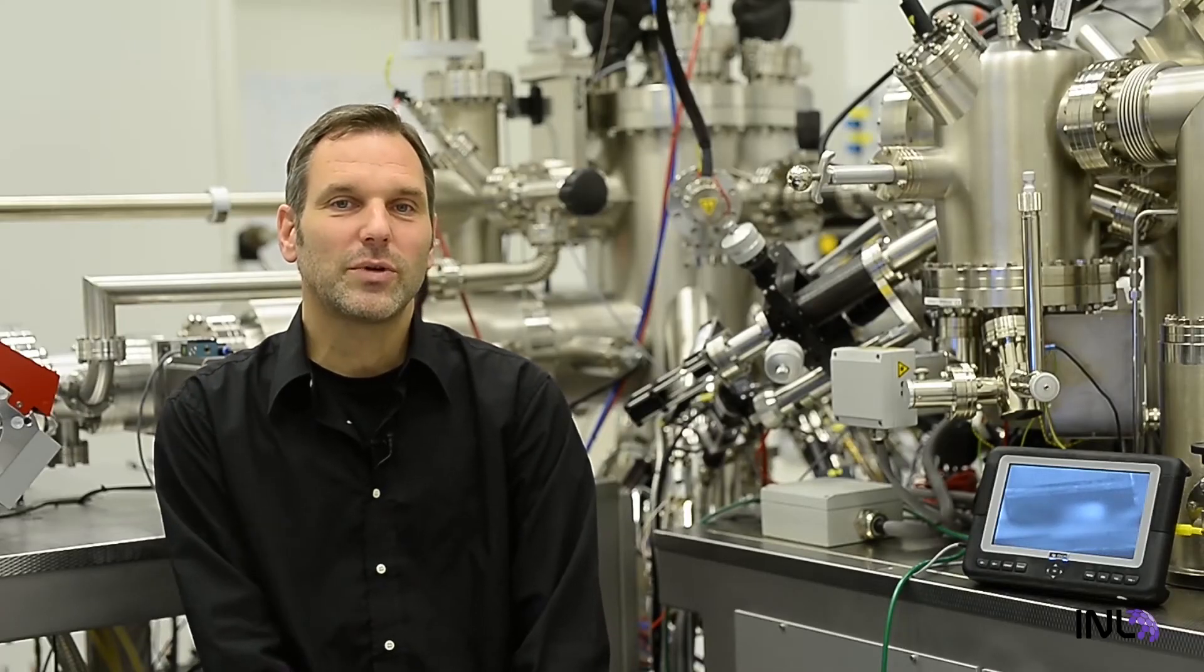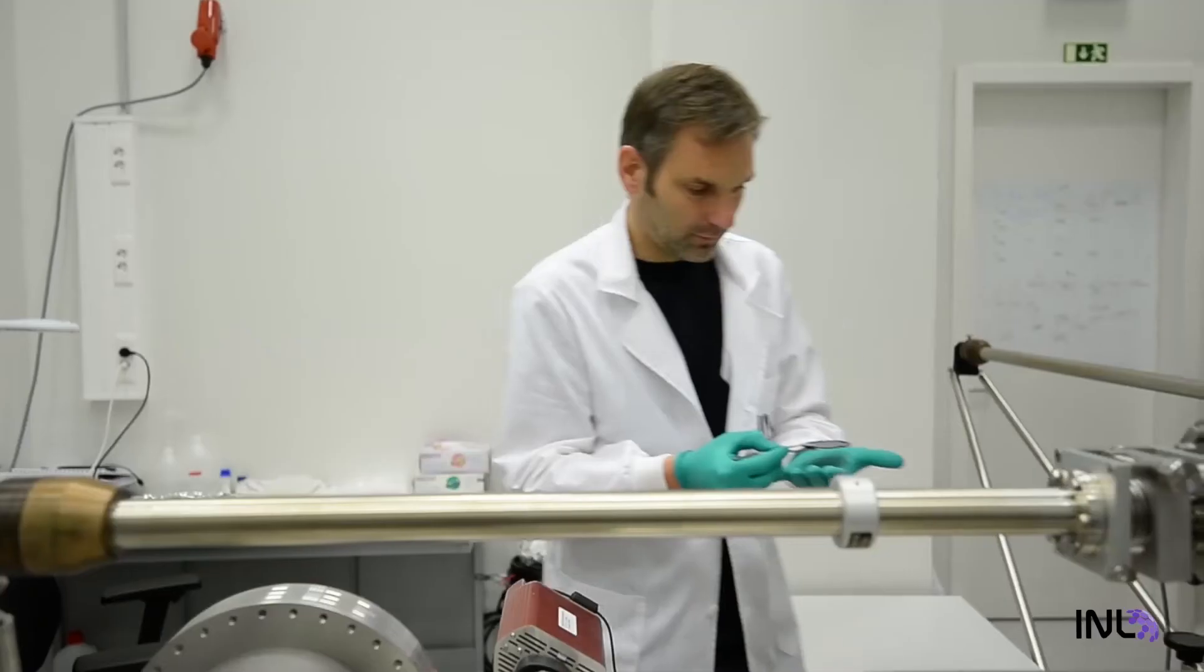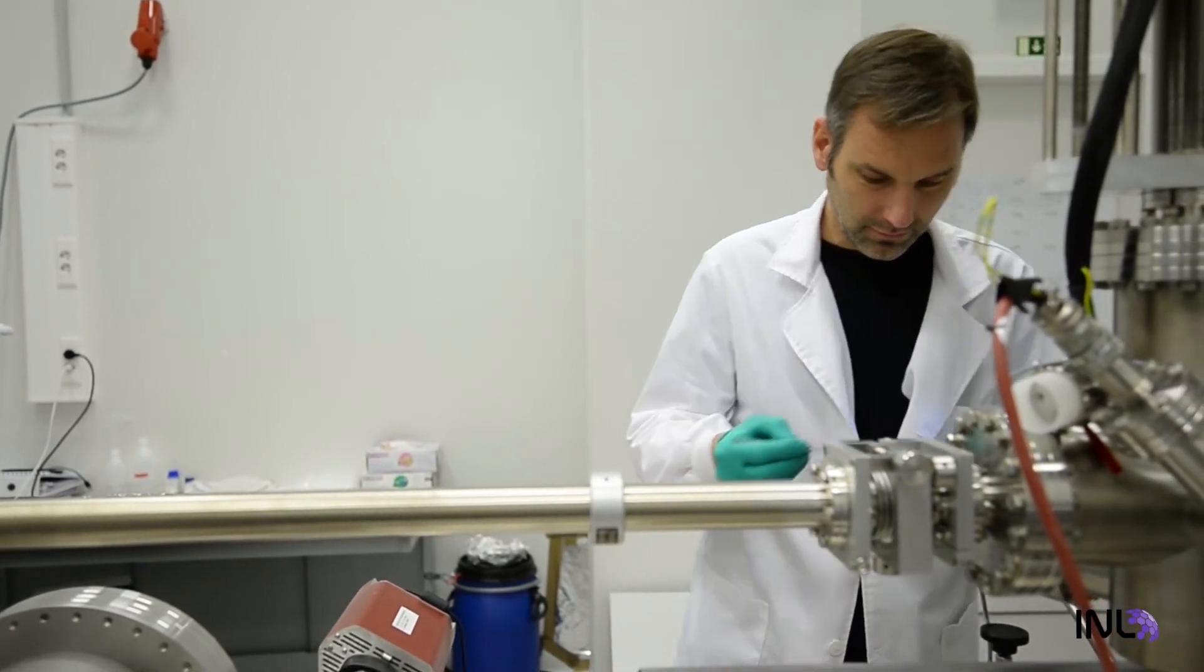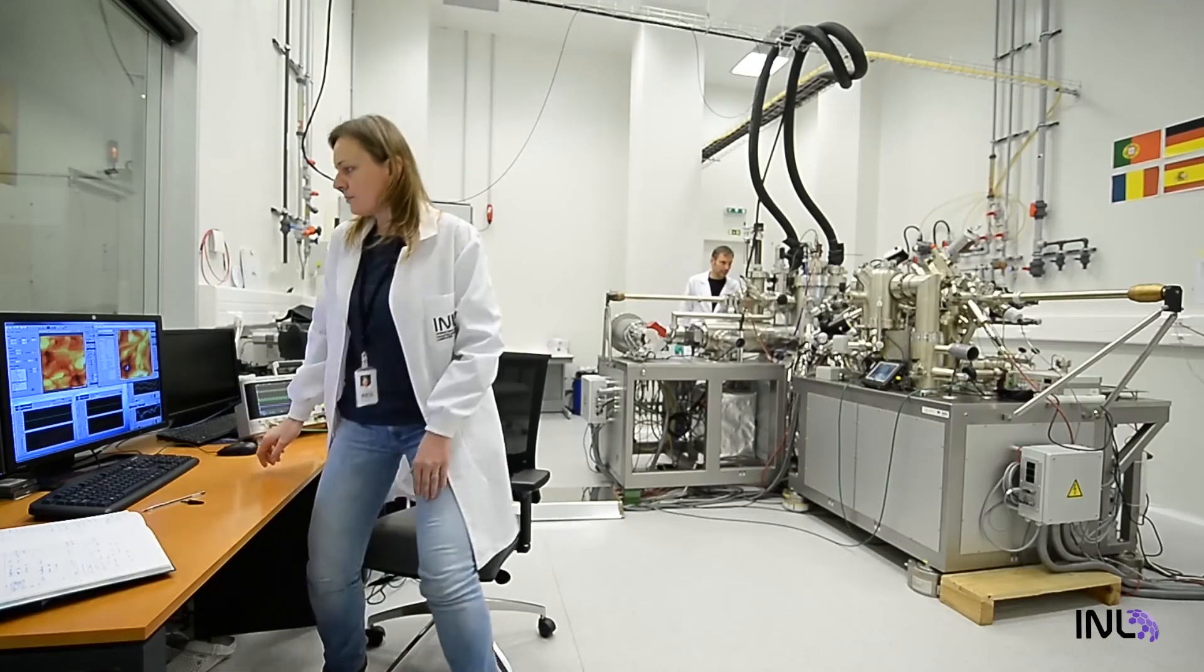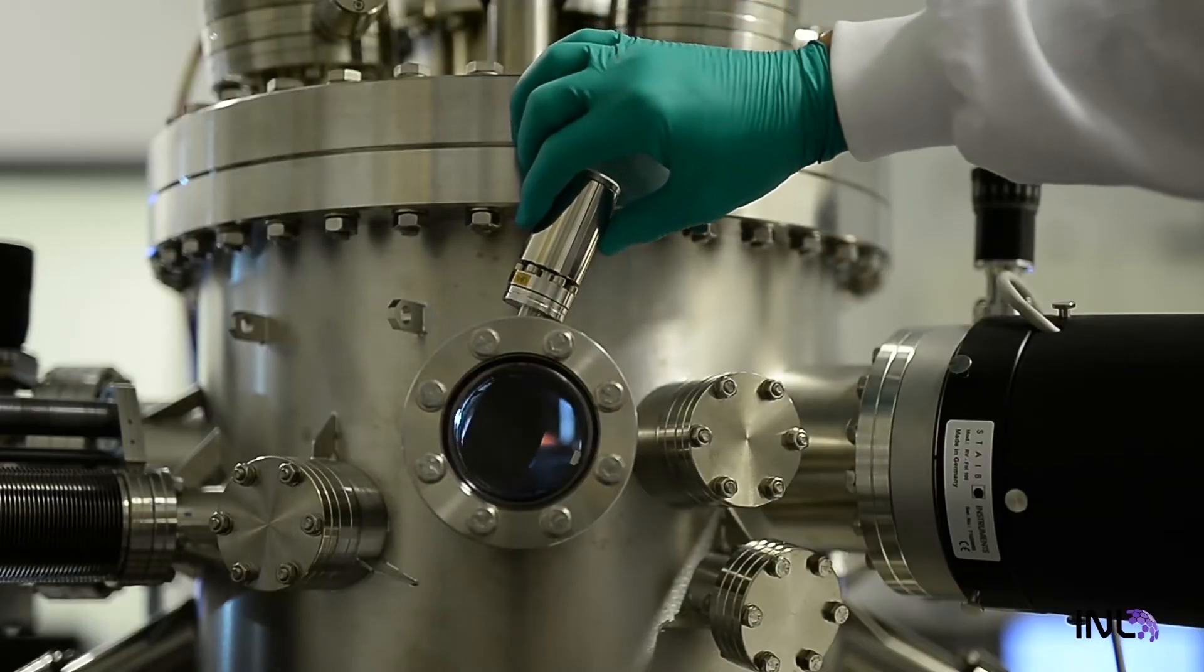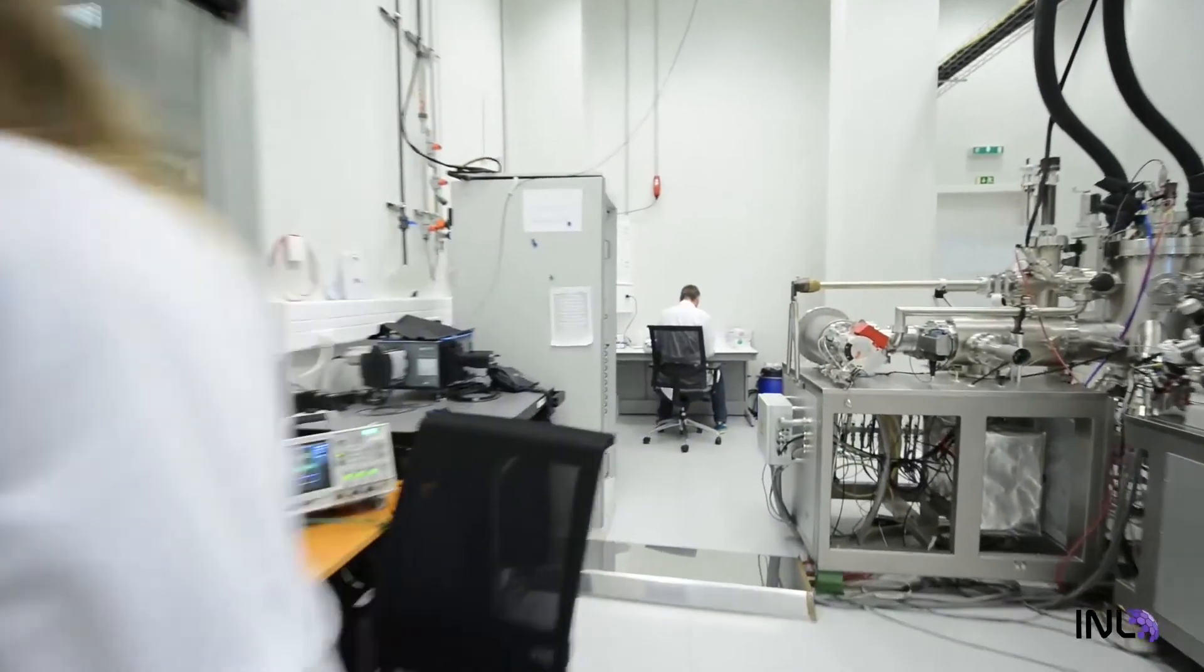We also do research on solar cells and materials that absorb the sunlight and convert it into electricity. Here we are investigating this possibility of embedding nanocrystals or quantum dots into solar cell materials. The goal is to increase the absorption properties of the material such that a broader part of the solar spectrum can be absorbed and converted into electricity.